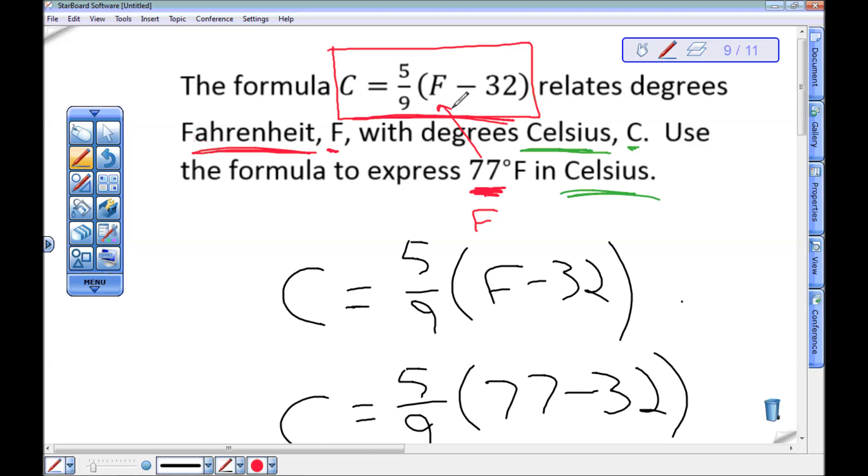That means when F is 77, C is 25. So 77 degrees Fahrenheit is 25 degrees Celsius.